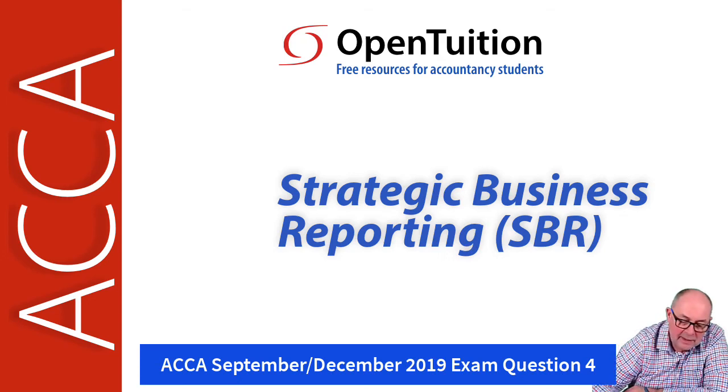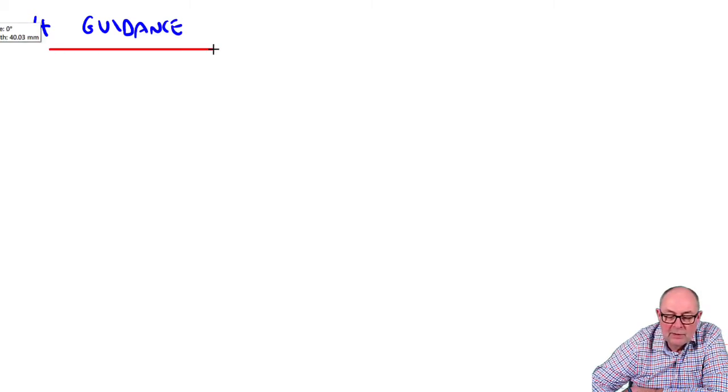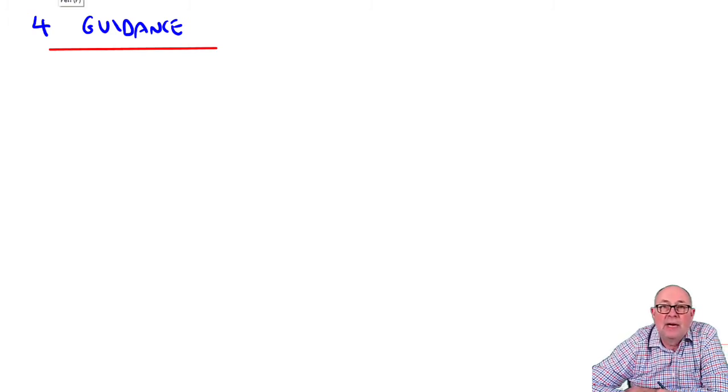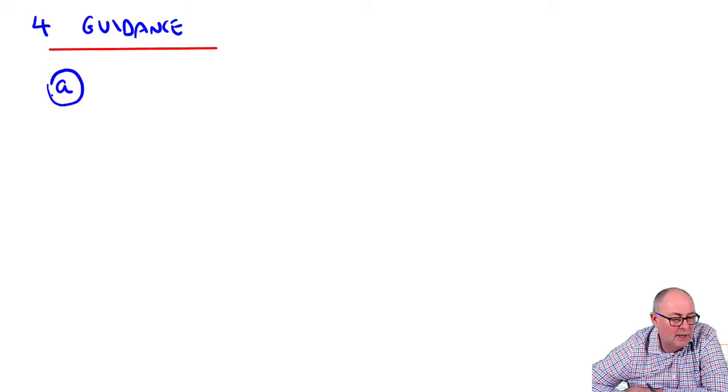Question four, guidance. Requirement A is extremely straightforward - six marks for general discussion, and unforgivable if we don't get nearly six marks here.